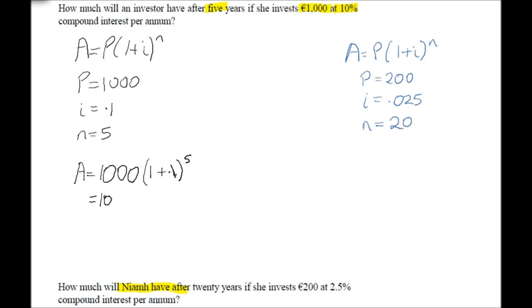So we need to simplify this down to find our answer. So 1 plus 0.1 is 1.1 to the power of 5. So filling this into our calculator, 1.1 to the power of 5 is 1.61051. And this is all multiplied by 1000. So our final value is 1610.51.